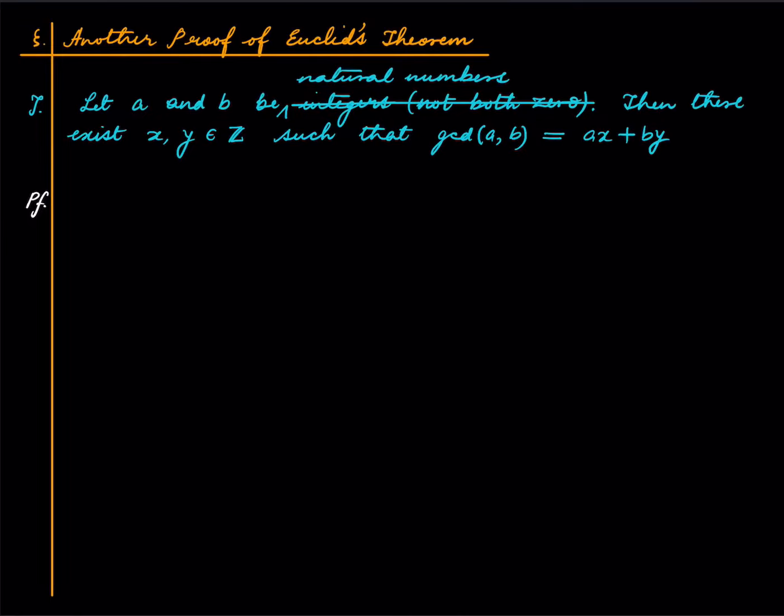So here is the thing. Suppose you have A and B not two integers but two natural numbers. So for natural numbers we will prove that there exist X, Y which are integers such that this happens. You can write GCD as the corresponding integer linear combination. So if we prove this for natural numbers, it follows for integers also.